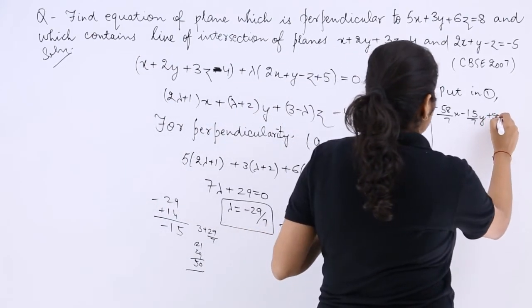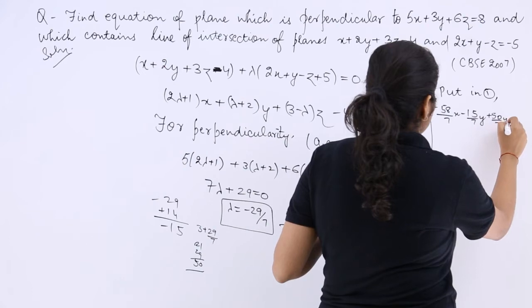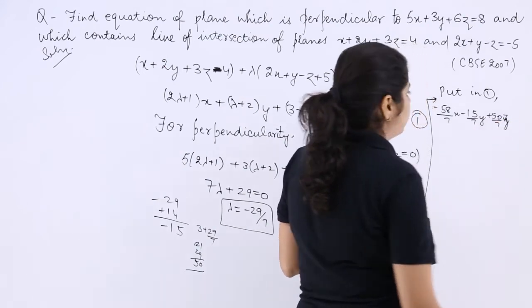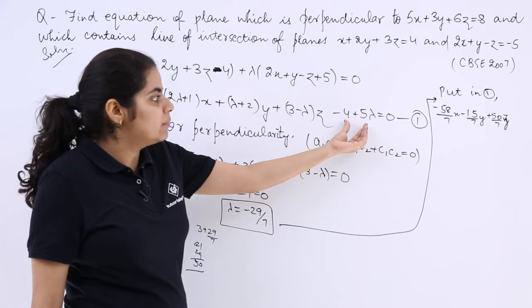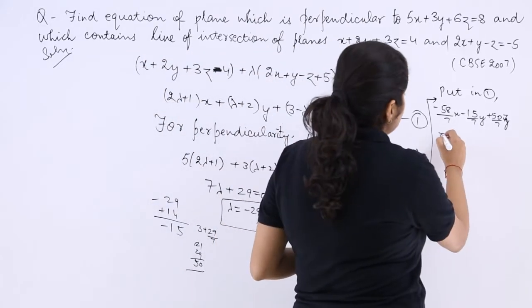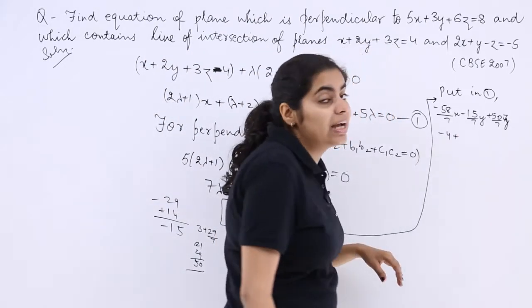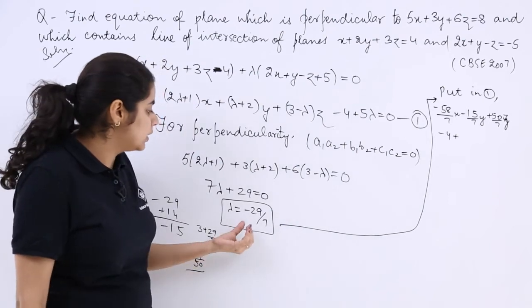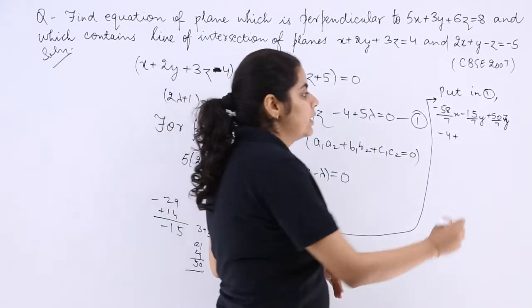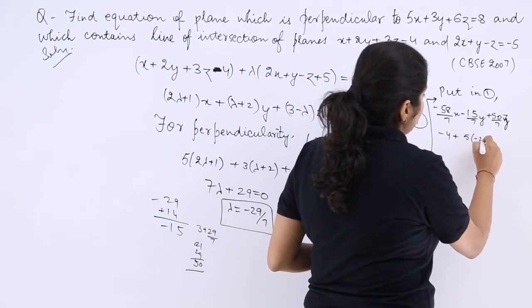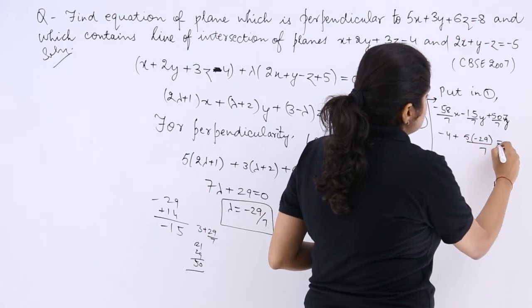So 5 lambda, now what is 5 lambda over here? 5 multiplied by minus 29 over 7 is equal to 0.